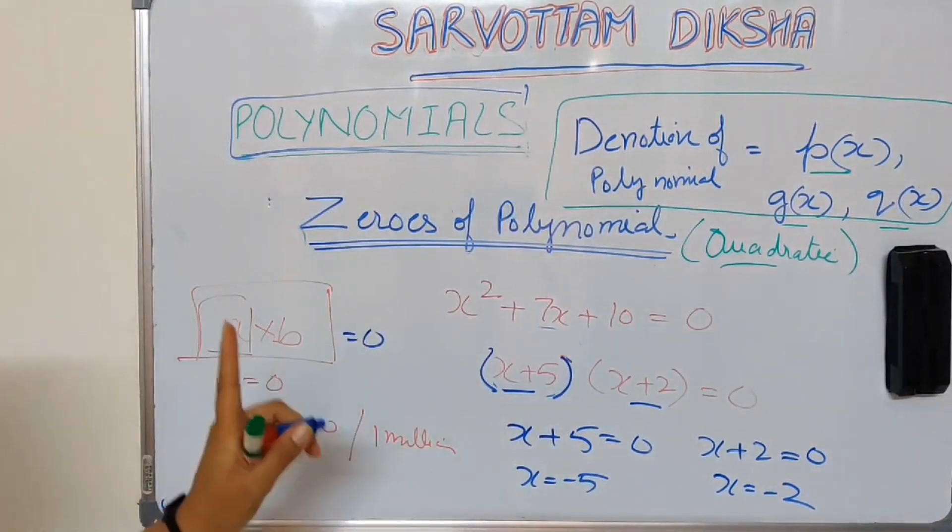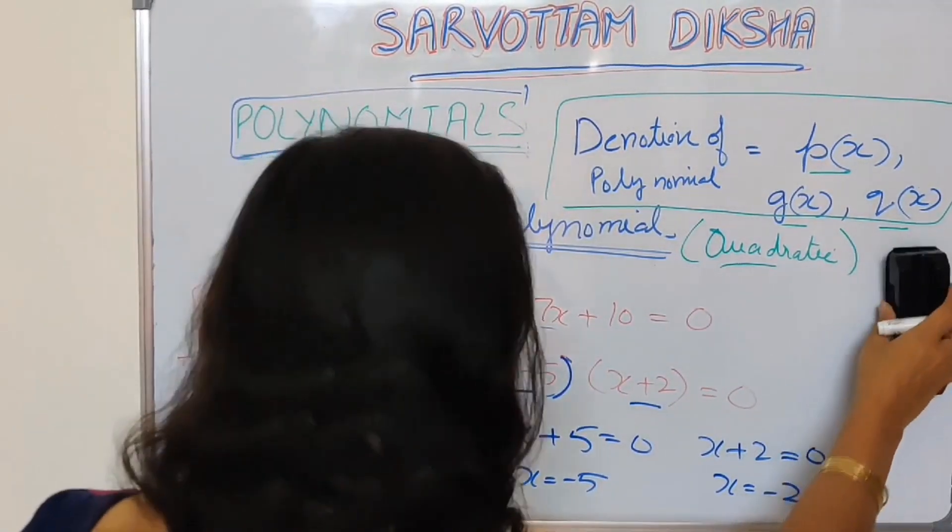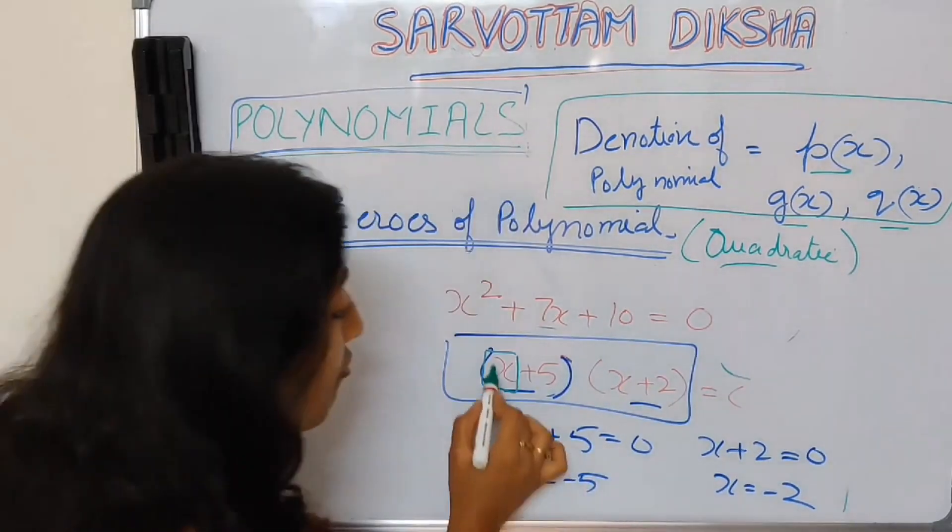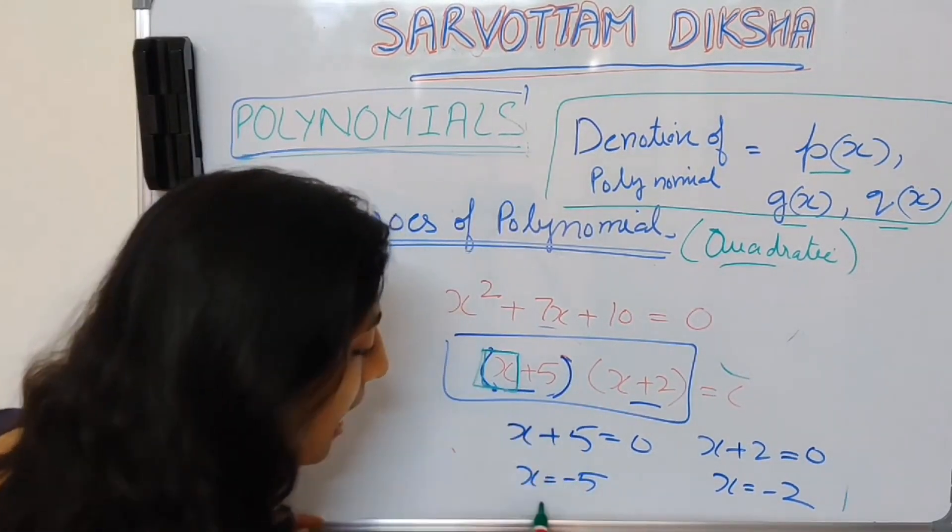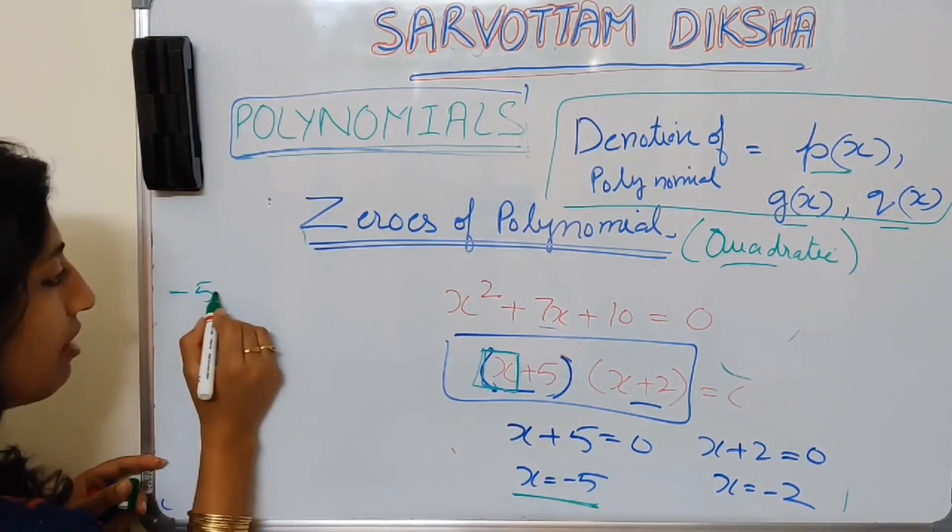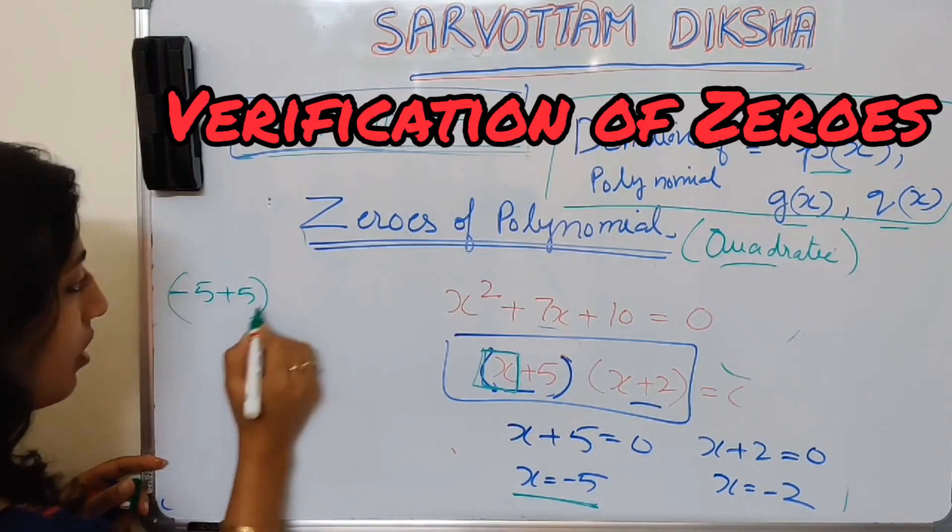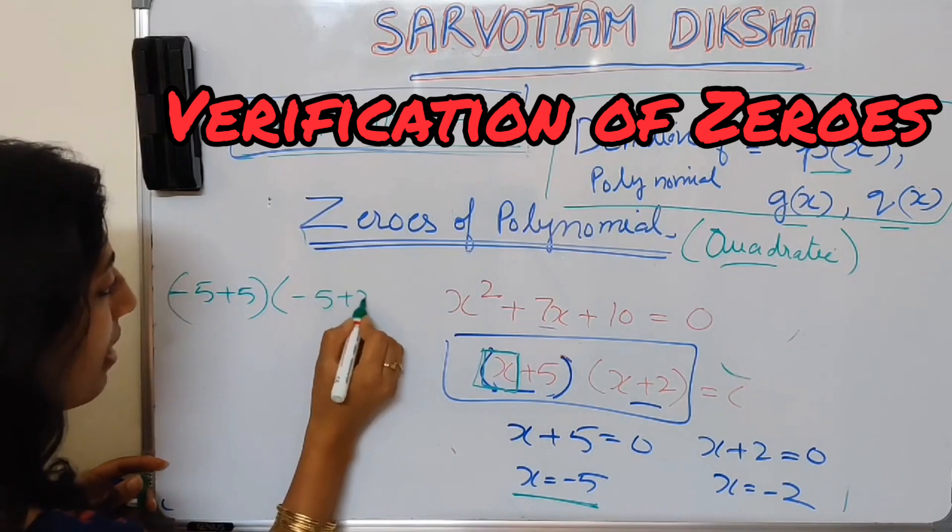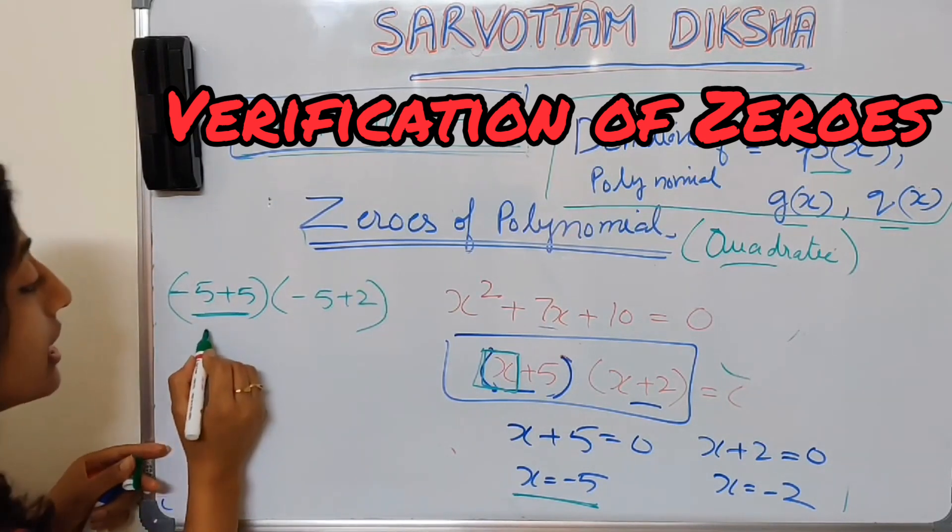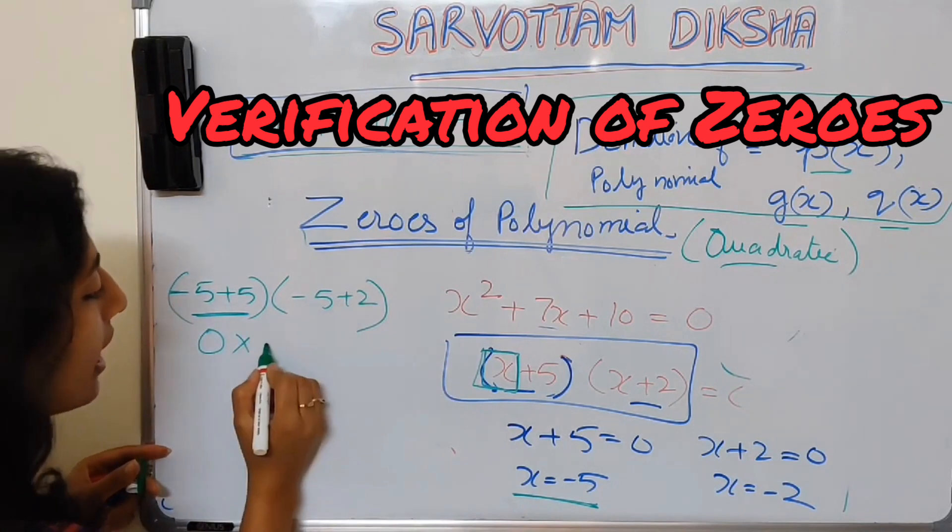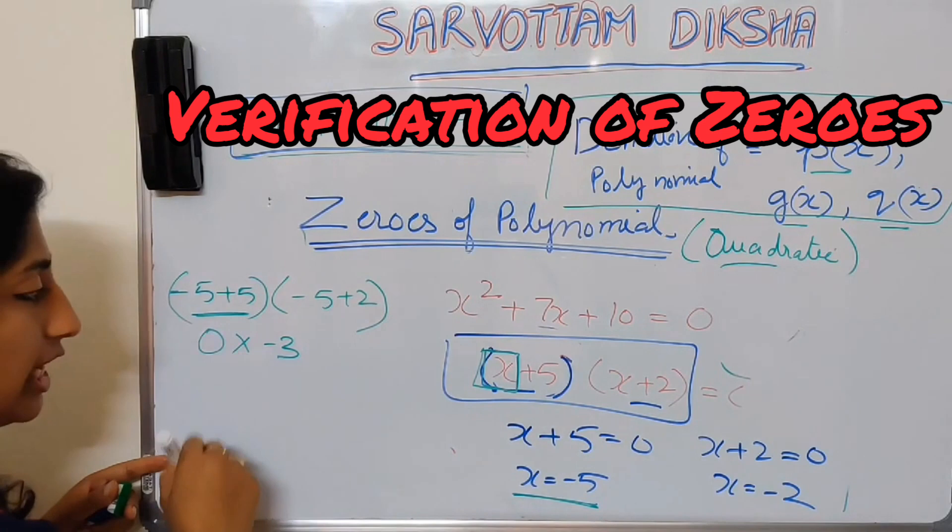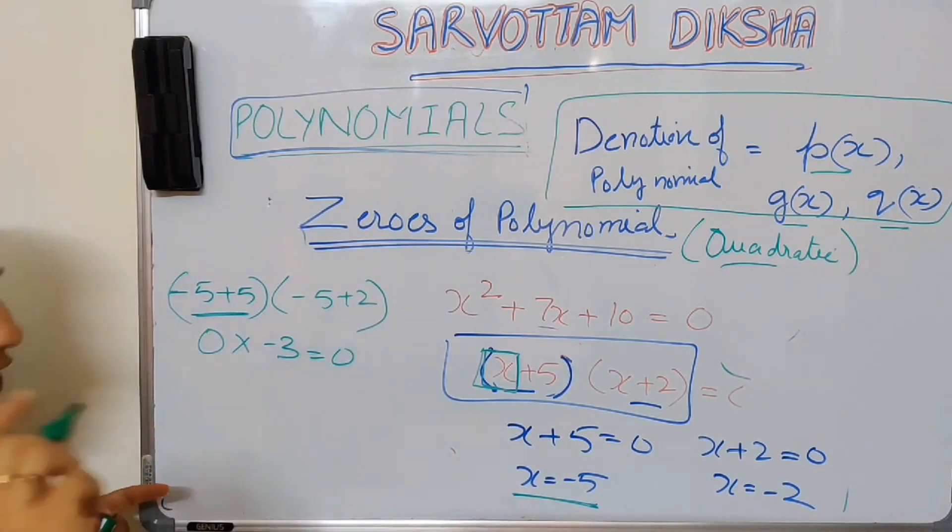See, now let me put my value minus 5 in this expression. What is happening when I am putting x as minus 5? Let me put the value: minus 5 plus 5, minus 5 plus 2. Here this expression is becoming 0, this expression is minus 3, but it is of no use. 0 into minus 3 will give me 0 only.